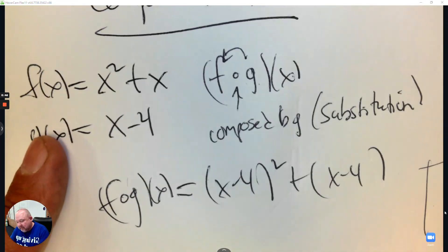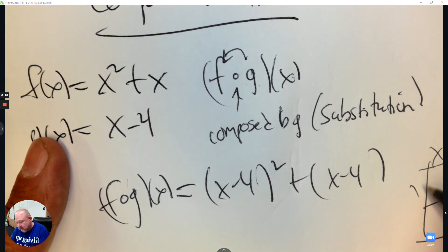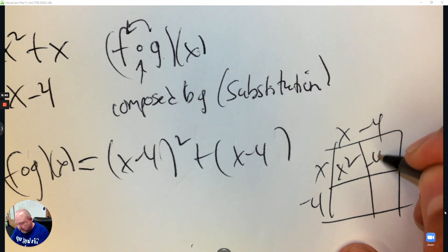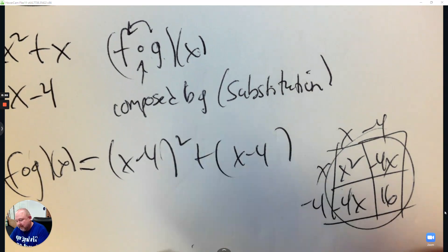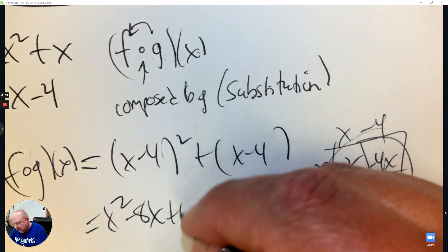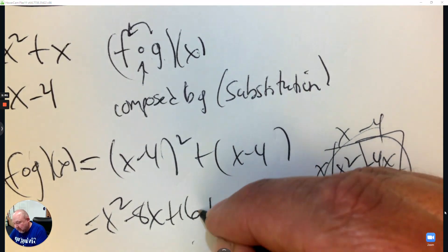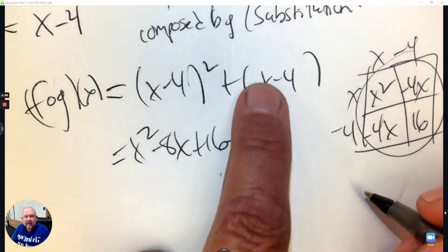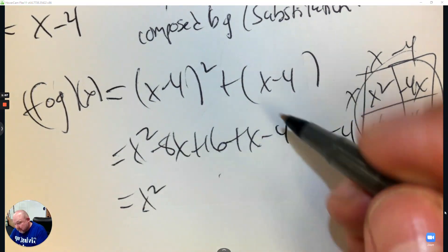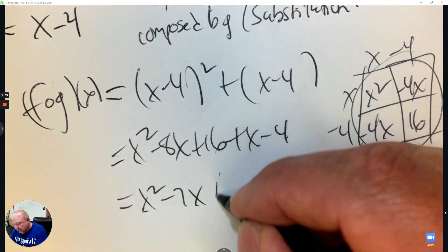If you did have to expand this, x minus 4 squared is here. And then combine like terms. So that's x squared minus 8x plus 16. And we still have x minus 4 here at the end. And then combine like terms. So we have x squared minus 7x and then plus 12.